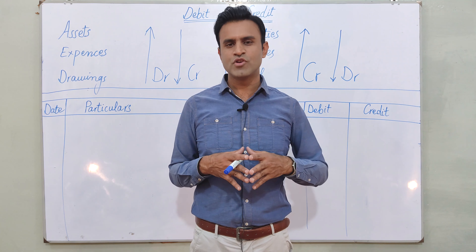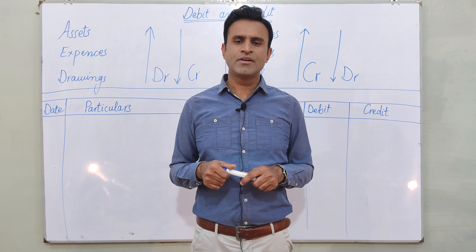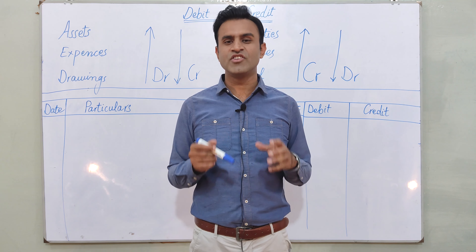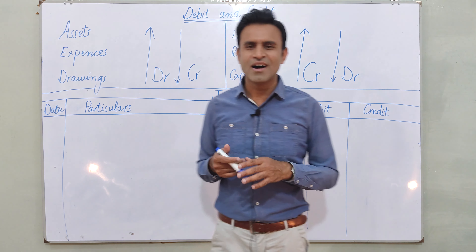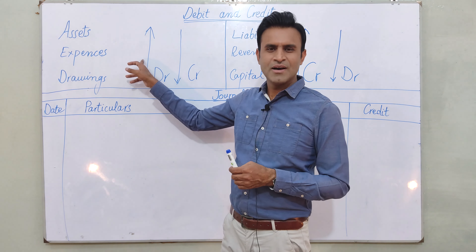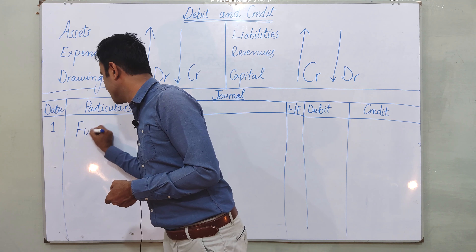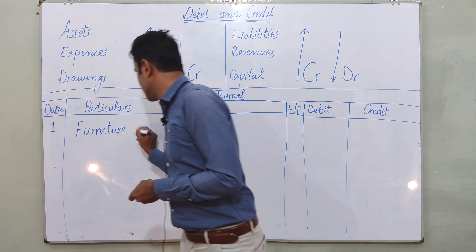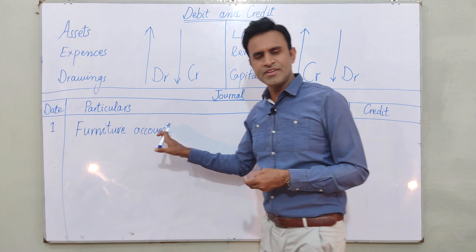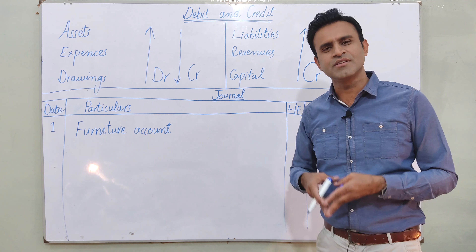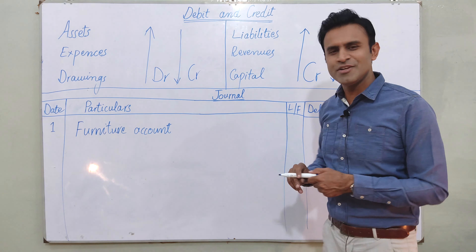I will give you one example and then we will practice in the next lecture in detail. For example, the business purchased furniture for 20,000. Now we will understand this transaction. Furniture is our asset. We have said that whenever an asset increases, where do we write it? Debit. So on the date of purchase, we write: Furniture Account — Debit — 20,000.